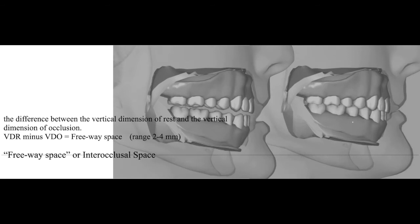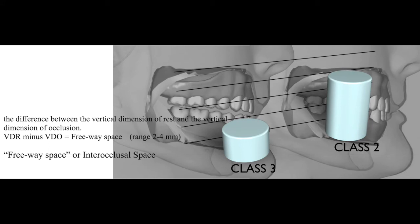The difference between vertical dimension of rest and vertical dimension of occlusion is called freeway space, which ranges between 2 to 4 millimeters. The freeway space varies by jaw relationship class: Class 3 has less than 2 mm, Class 2 div relationship has larger than 4 mm, and Class 1 jaw relationship ranges between 2 to 4 mm.